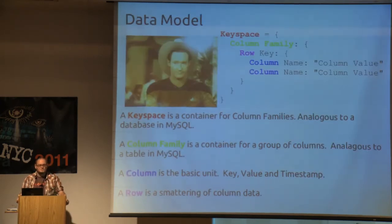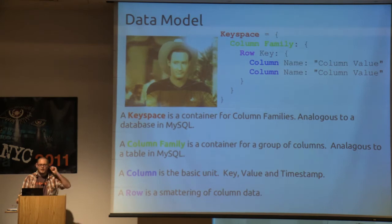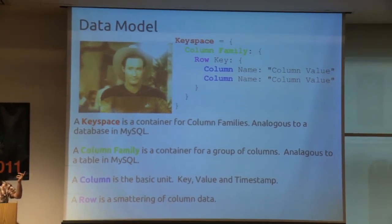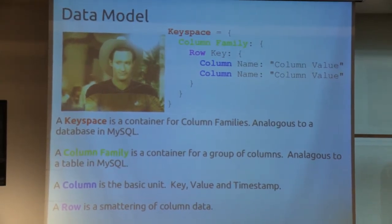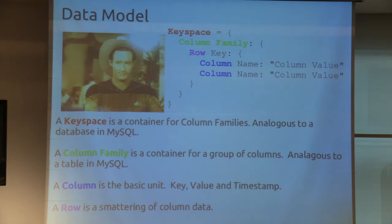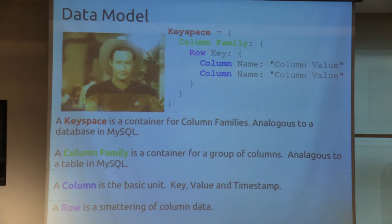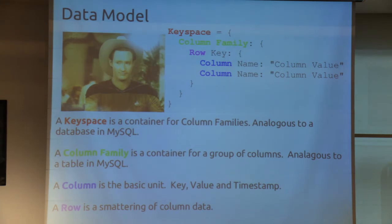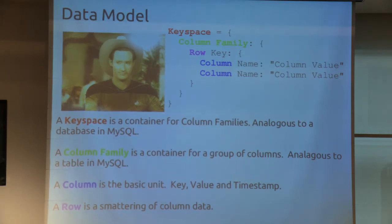On the data model — and I know there's another talk on data modeling after me — you can think of a key space as sort of a database and a column family as sort of a table. A column is the basic unit with a key, value, and timestamp. A row is a smattering of column data. For an ops guy, understanding how rows are represented is actually more important, mostly because you've got to think in terms of fat rows and skinny rows. It plays into how you tune your caching, which is kind of a dark art.